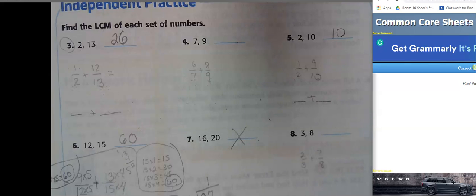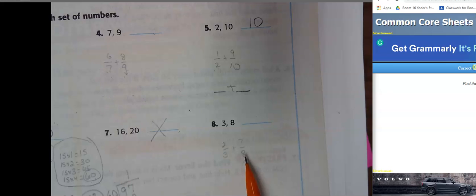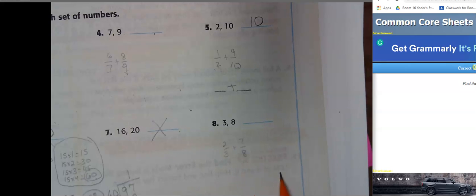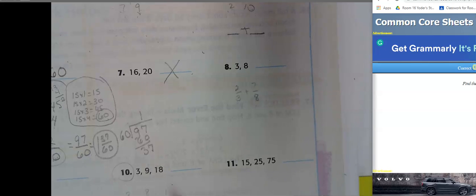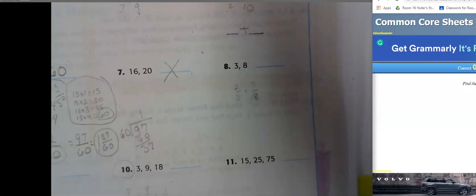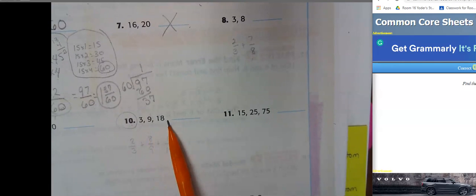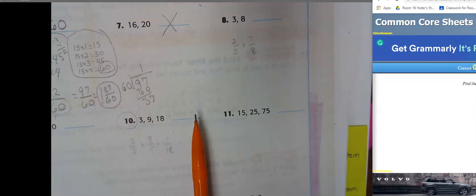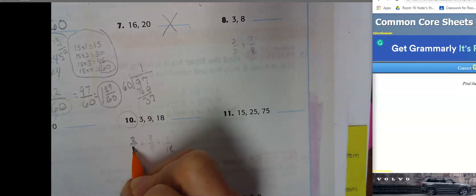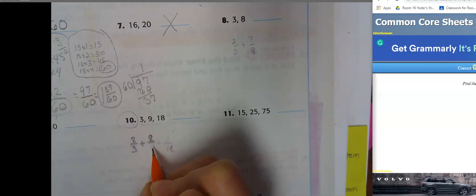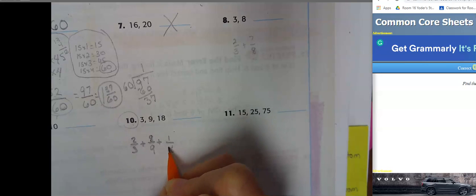Number 7, don't worry about it. Number 8, however, I do. I want you to find the least common multiple as if 3 and 8 were the denominators. But then, I want you to go ahead and add 2/3 plus 7/8. Make sure that you simplify. The last one that you need to do is number 10. Then 3, 9, and 18, what is the least common multiple? What is the smallest denominator that you could get if you were adding these three fractions? Then add them. Come up with the final answer. But don't forget to write the least common multiple here in the blank. The smallest number that you were able to turn the denominators into. I'll go over these three a little bit larger. It's 2/3 plus 8/9 plus 1/18.